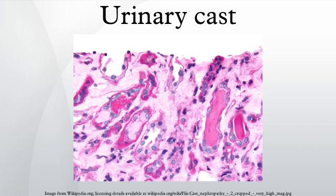Pigment casts are formed by the adhesion of metabolic breakdown products or drug pigments, and are so named due to their discoloration. Pigments include those produced endogenously, such as hemoglobin in hemolytic anemia, myoglobin in rhabdomyolysis, and bilirubin in liver disease. Drug pigments, such as phenazopyridine, may also cause cast discoloration.